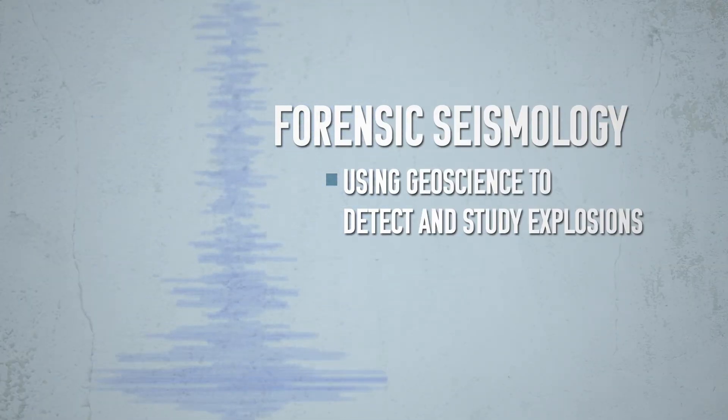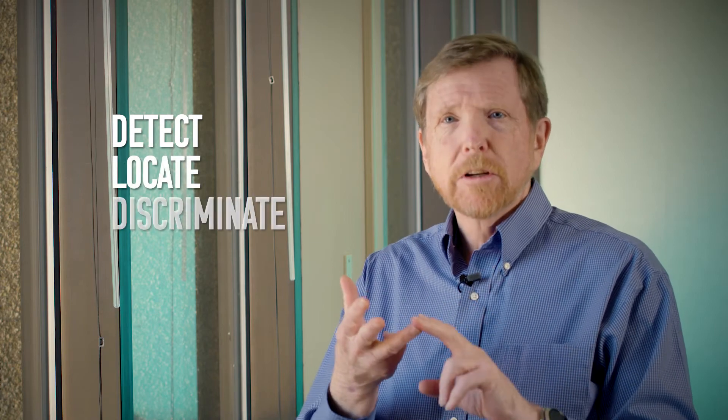So the holy grail for forensic seismology is to be able to do three things. The first is to be able to detect, the second is to be able to locate, and finally is to be able to discriminate. Can we look at those seismic signals to tell you, is it man-made or is it natural?